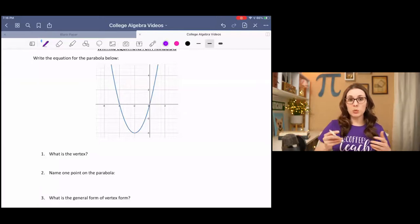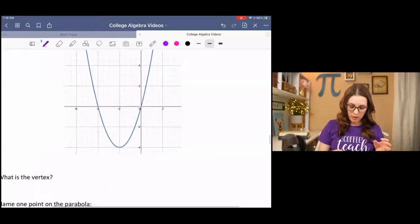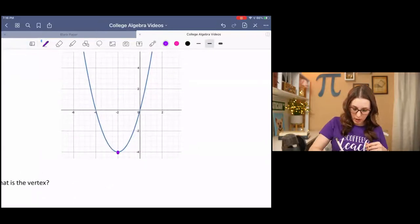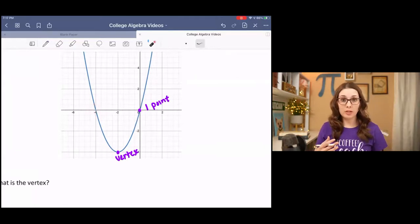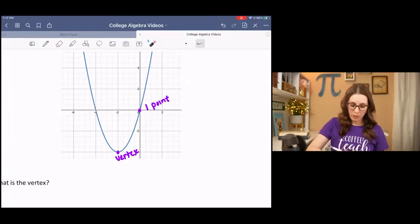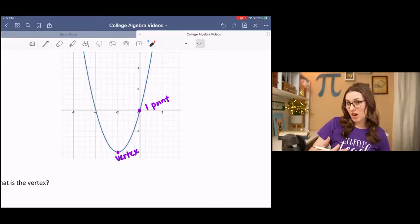So in this case, we were given the parabola and based on the picture, we can pretty easily locate the vertex and at least one point. There's another one on here that we can easily see, so you could use that one instead if you want, but it really doesn't matter because they're both on the same parabola, so we're going to get the same answer.